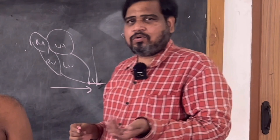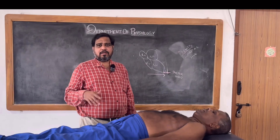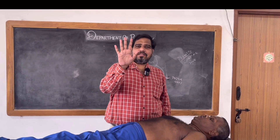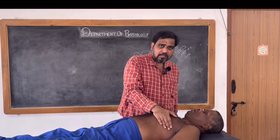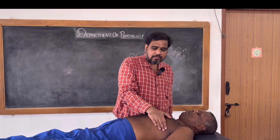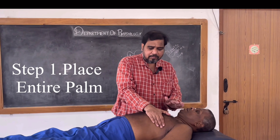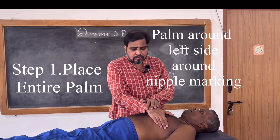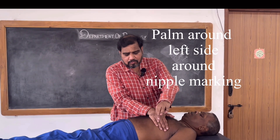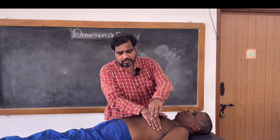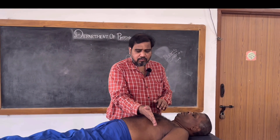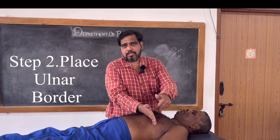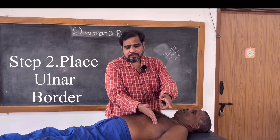Now let us go to the procedure. To make it simple, I will usually tell it as a three-step method. This is the first step — entire palm. For example, I am keeping the entire palm here. I am able to feel some impulse in my fourth finger. The first step is the entire palm.